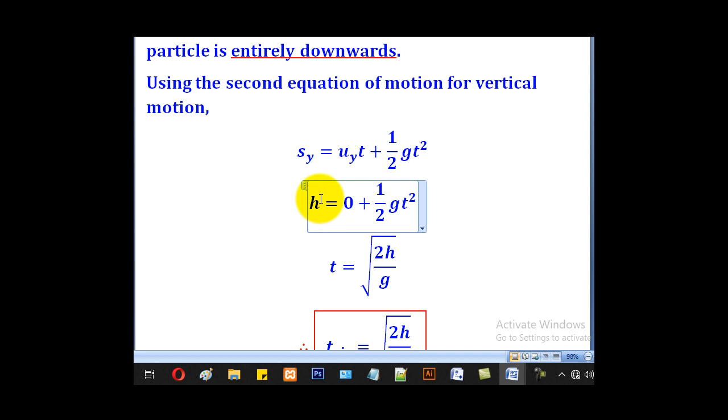So we take the downward motion to be positive. h, that is the displacement, positive h, equal to uy, which is 0 as we already saw, plus a half gt squared. So when you substitute and make t the subject, we shall come up with t equal to square root of 2h over g.